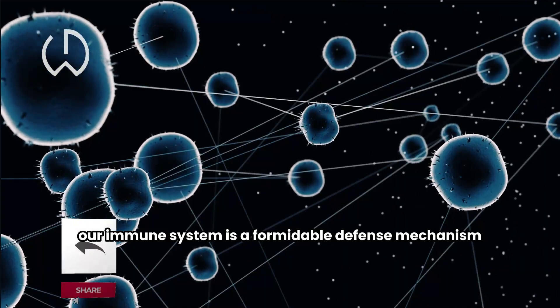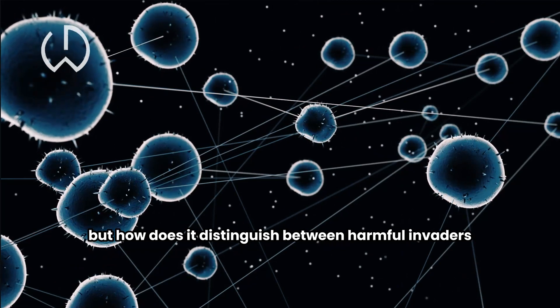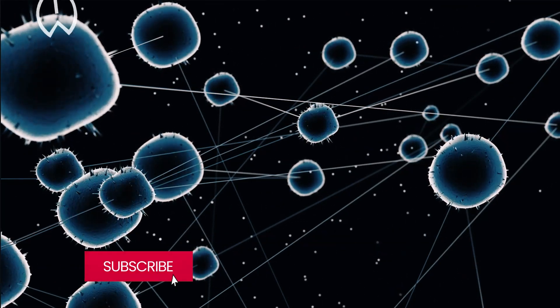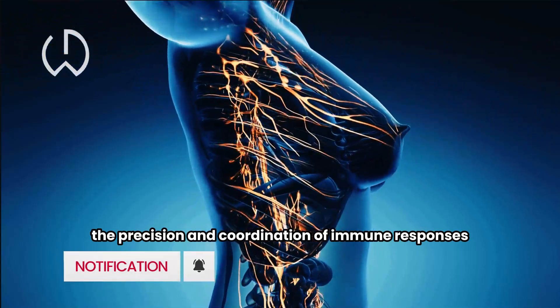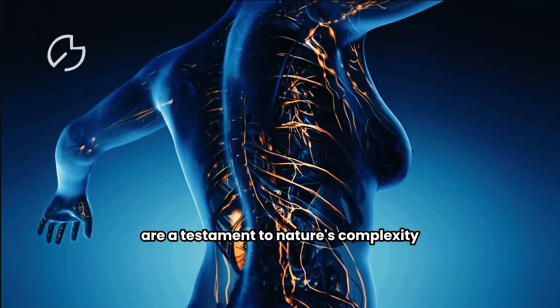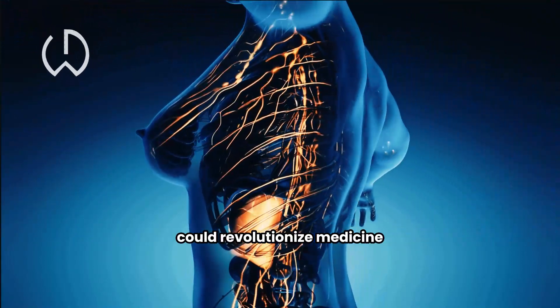Our immune system is a formidable defense mechanism, but how does it distinguish between harmful invaders and the body's own cells? The precision and coordination of immune responses are a testament to nature's complexity. Uncovering the immune system's secrets could revolutionize medicine.